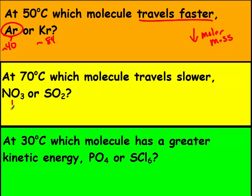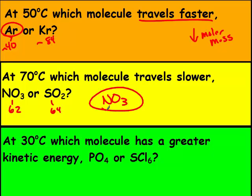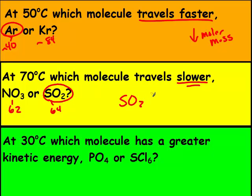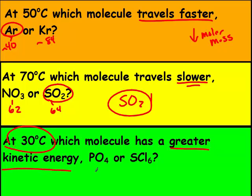This one was much closer — NO2 is 46 and SO2 is 64, so they travel almost at the same rate, but SO2 is slightly slower. And for this problem, they want to know who has the greater kinetic energy. They're both at 30 degrees, so neither — it will be the same because they're both at the same temperature.